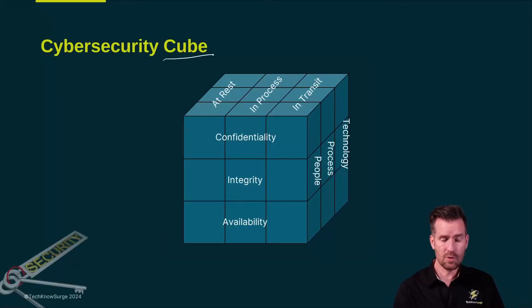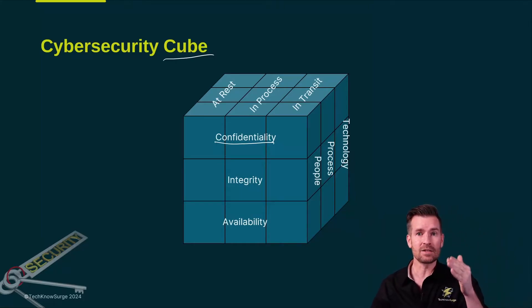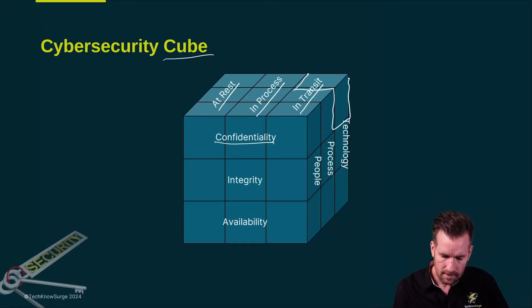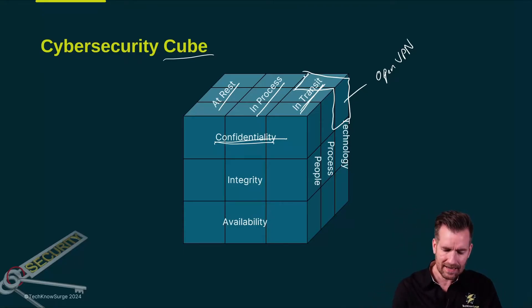So here's where the cube comes into play. Because now we can think about confidentiality, but instead of being this humongous thing that we got to think about all these different aspects, we can break it down into smaller components. How does confidentiality come when we're talking about data at rest? Or how about data in process? Or how about data in transit? Not only that, but we can think about what technologies do we implement for confidentiality when it's in transit? We already said confidentiality in transit is going to be a VPN. So we're going to use a VPN, but which technology? Let's do OpenVPN. Or maybe it's going to be a Cisco AnyConnect. Or there are several different options that we have out there.